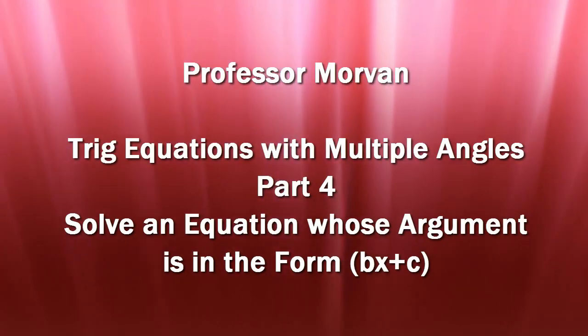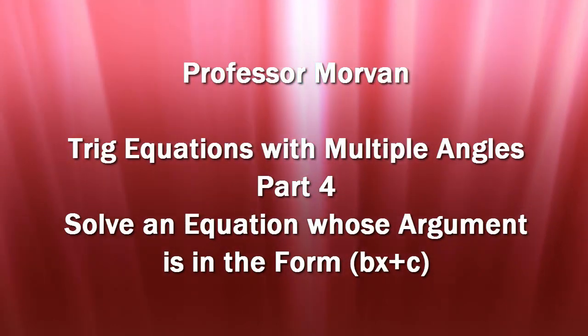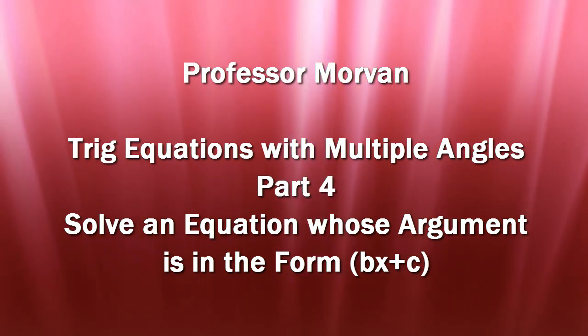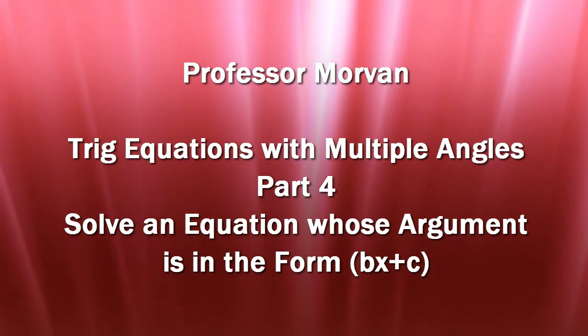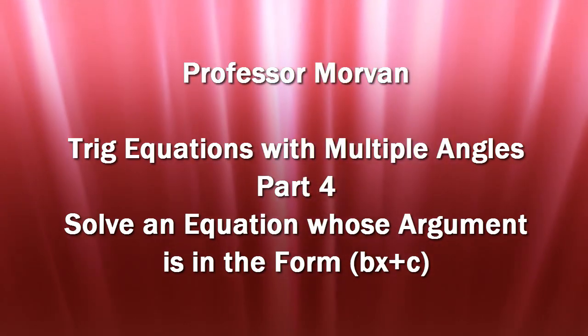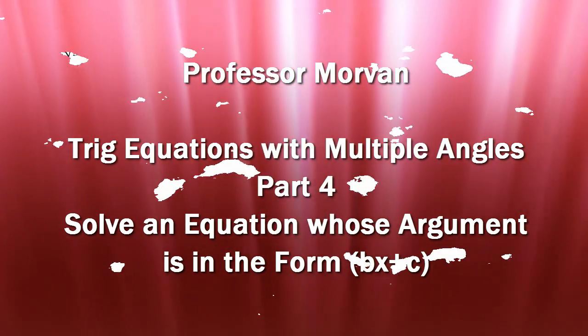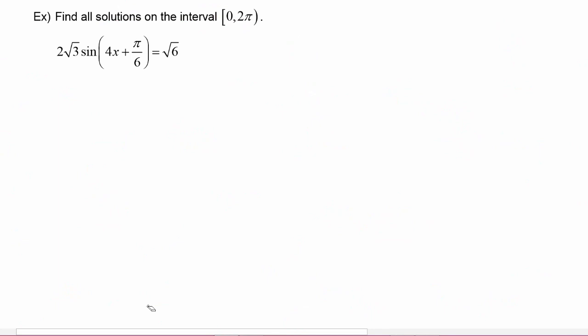In part four of our lesson on trig equations with multiple angles, you will learn how to solve an equation whose argument is in the form (bx + c). In this example, we have to find all solutions on the interval zero to two pi for the equation: two radical three times the sine of the quantity four x plus pi over six is equal to radical six.